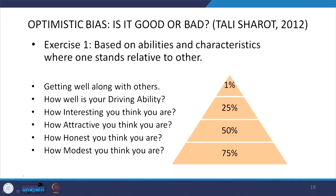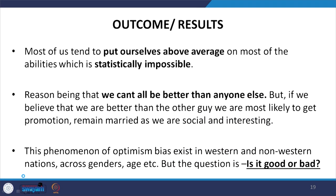If your answers tend toward the higher side — that is, mostly yes — then you are likely in the 75th percentile. Most of us tend to put ourselves above average on most abilities, which is statistically impossible. There is a tendency that we think we are better than anyone else, but we cannot always be better than everyone else — sometimes we are better, sometimes we are not.